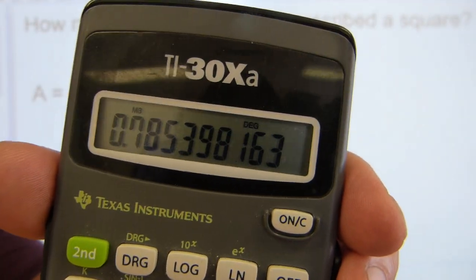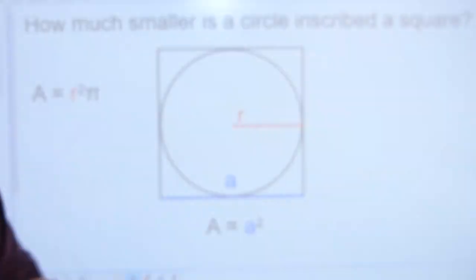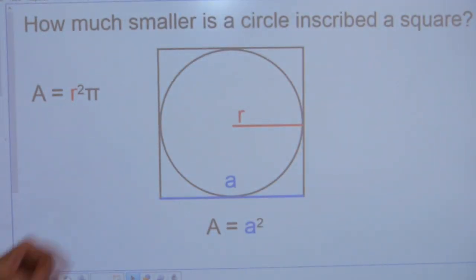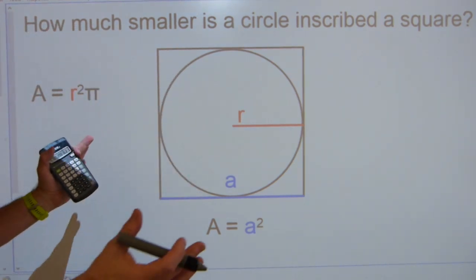I'm working with the glare here, so 78.5% if you want to look at it that way. This number is telling you by how much is the circle smaller than the square.